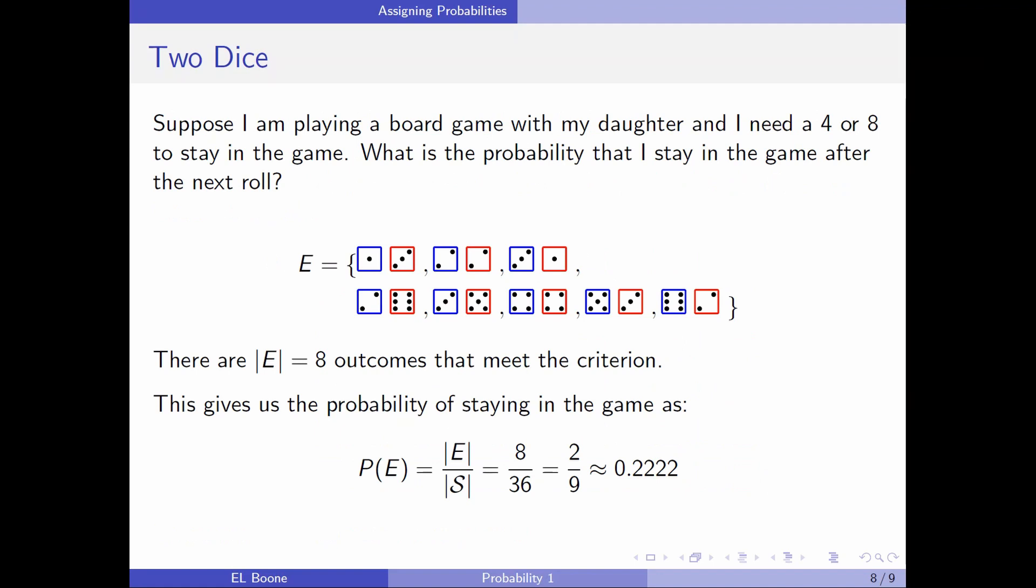Suppose I'm playing a game with my daughter and I need a four or an eight to stay in the game. What is the probability I stay in the game after the next roll? So, how many ways can I get a four? Well, a one and a three, a two and a two, a three and a one. That's the only ways I can get a four. What about an eight? Well, there's two and six, three and five, four and four, five and three, six and two. Those are the only ways that I can get an eight. So, if I counted all these up, there are one, two, three, four, five, six, seven, eight outcomes in this group. So, here if we were interested in this probability, we take the number of outcomes in E over the number of outcomes in S, which is eight over 36 or two ninths, which is approximately point two, two, two, two. So, there's only a 22% chance that I'm going to stay in the game.